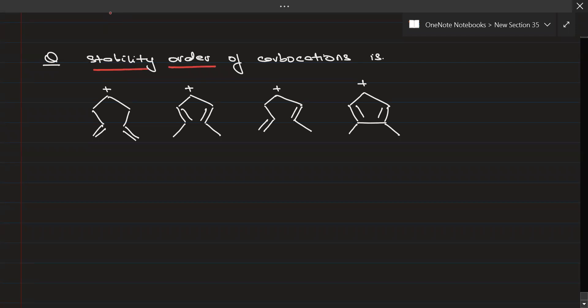Stability order of the carbocations: you have got four hyperconjugating structures in this one, no resonance stabilization.